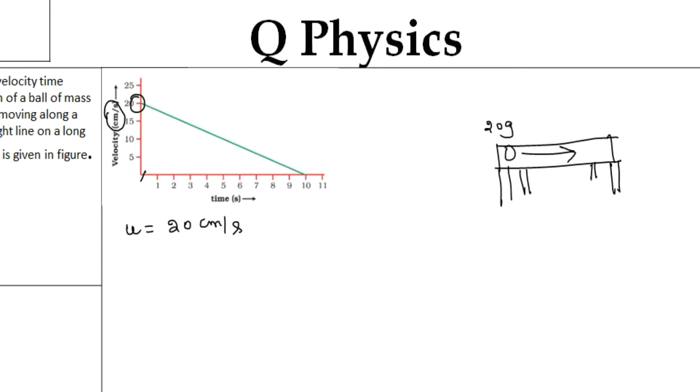So this can be written as 20 times 1 centimeter per second. We know that 100 centimeters equals 1 meter. So 1 centimeter is equal to 1/100th of a meter. So if I substitute, then 20 times 1 centimeter equals 1/100 of a meter, so 1/100 meters per second. If I cancel this, 2/10 equals 0.2 meters per second.